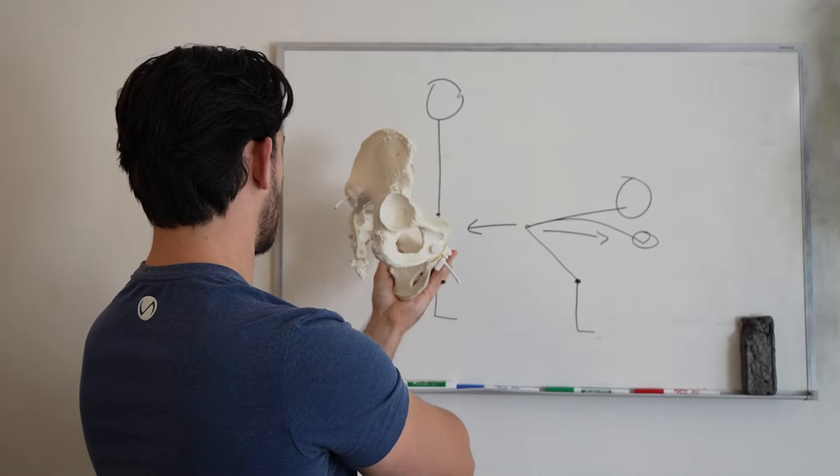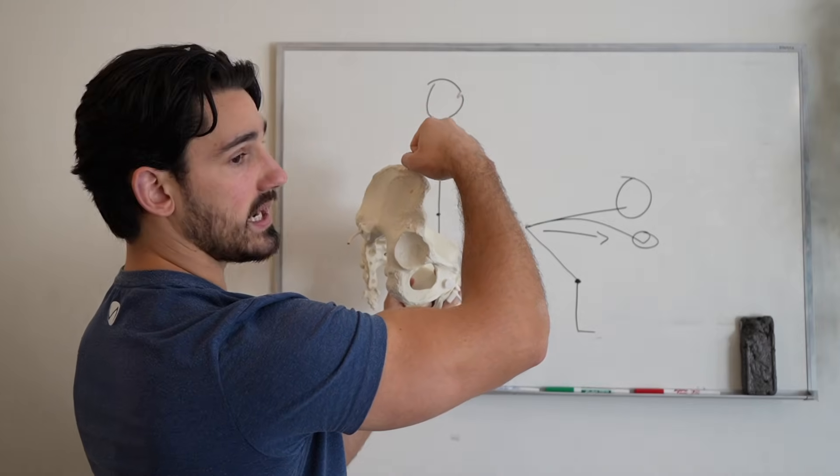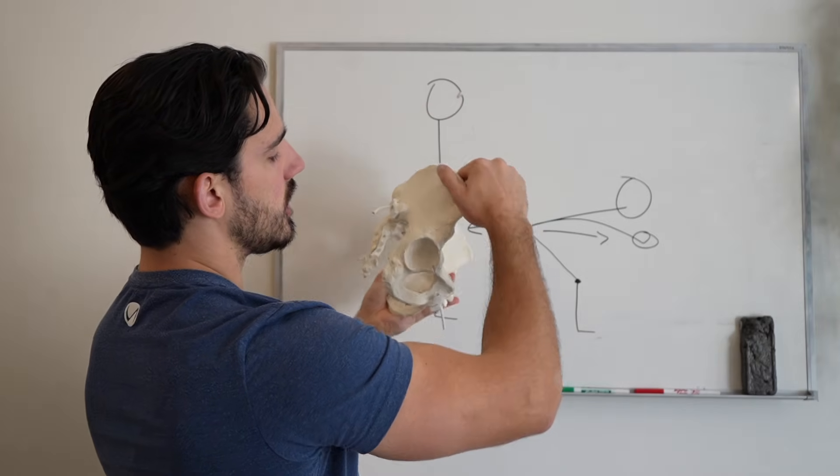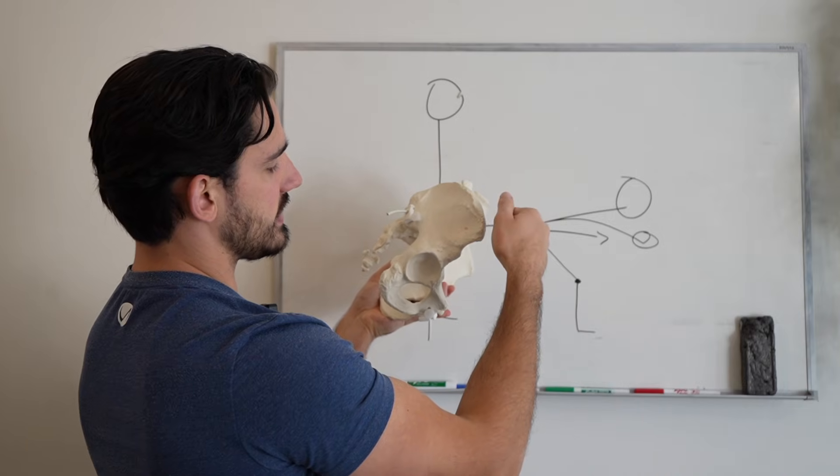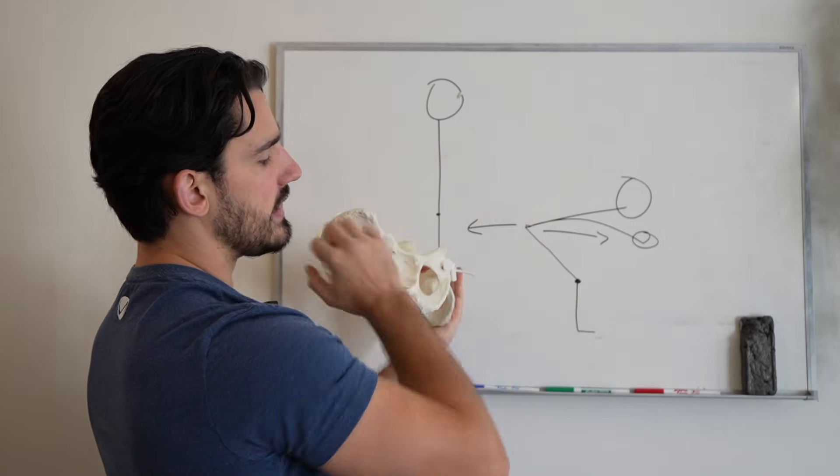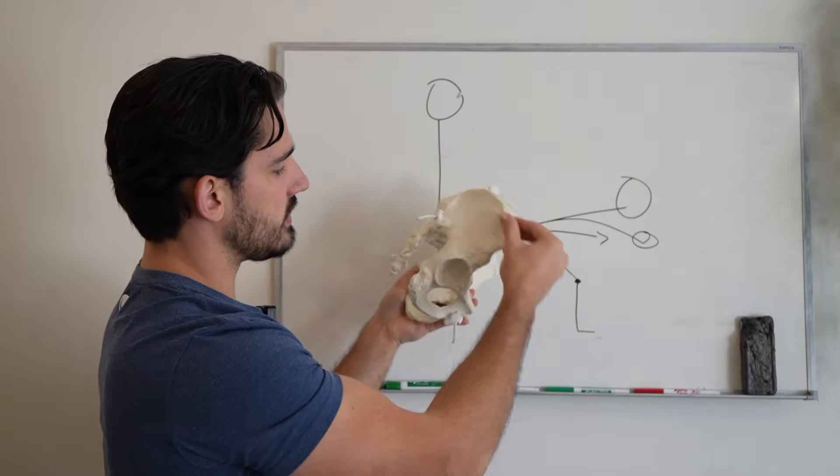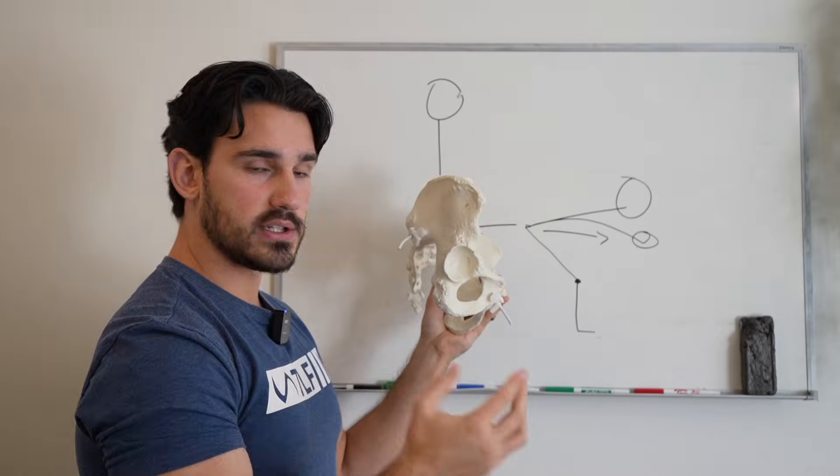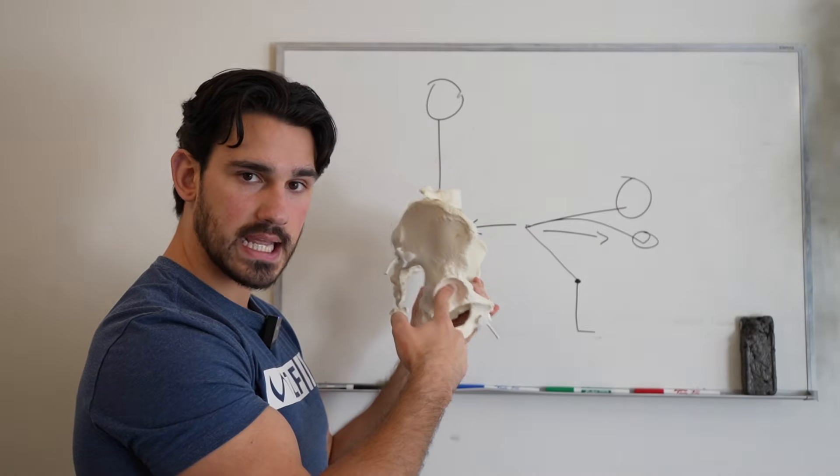And then if our hand still sort of stays on that portion of the wheel and we turn the wheel to the left now, now all of a sudden we have basically the opposite motion. And so thinking about the pelvis basically as this wheel-like thing allows us to basically just isolate motion at this joint, which is ultimately what we want in a hinge.